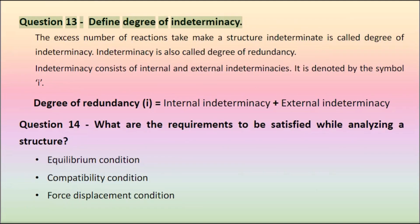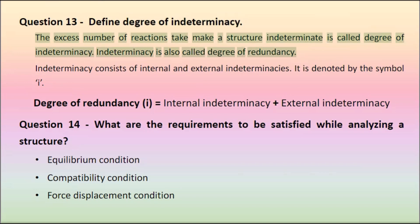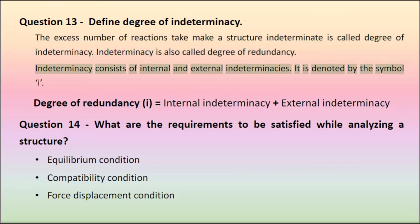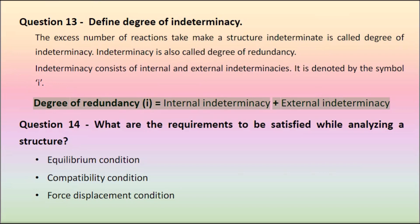Question 13: Define degree of indeterminacy. The excess number of reactions that make a structure indeterminate is called degree of indeterminacy. Indeterminacy is also called degree of redundancy. It consists of internal and external indeterminacies, and is denoted by the symbol I. Degree of redundancy equals internal indeterminacy plus external indeterminacy.